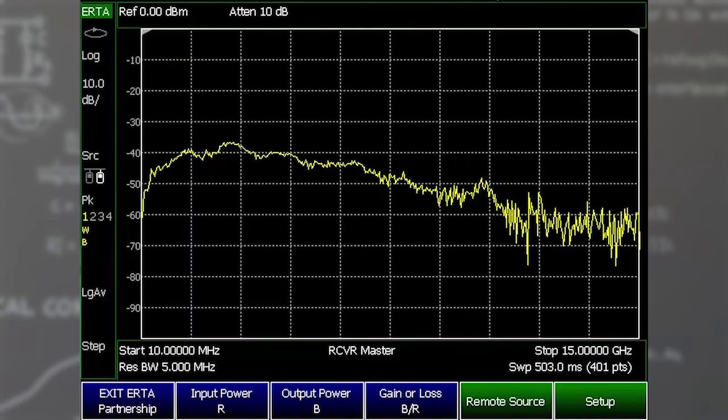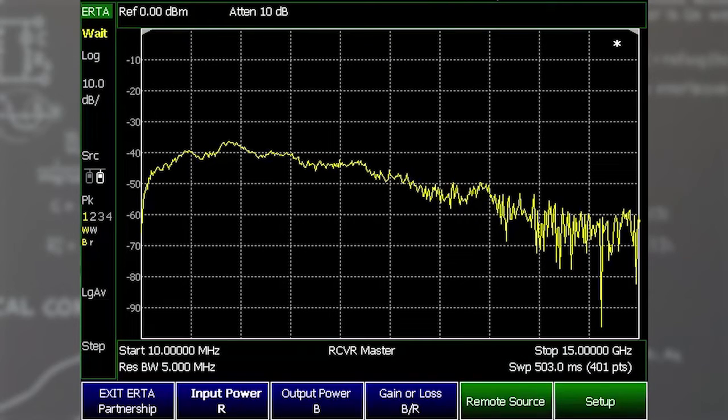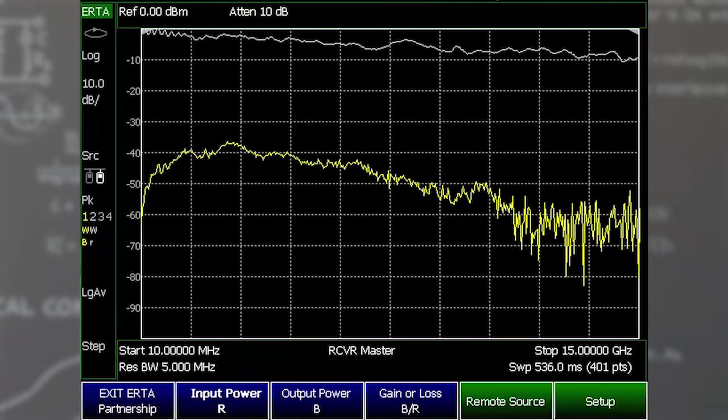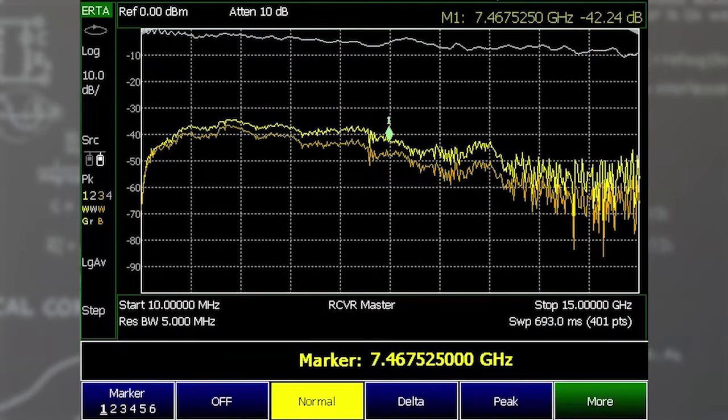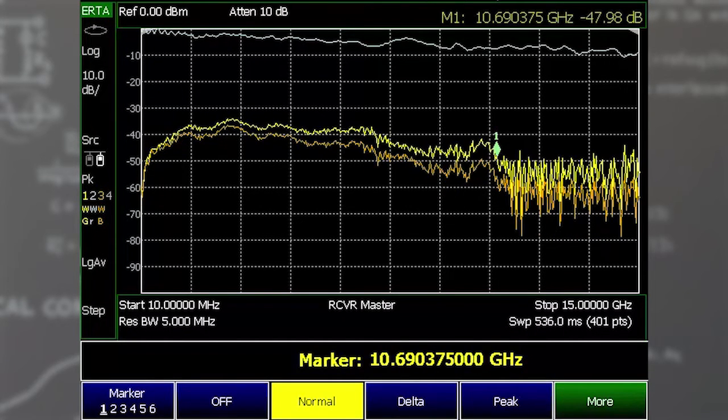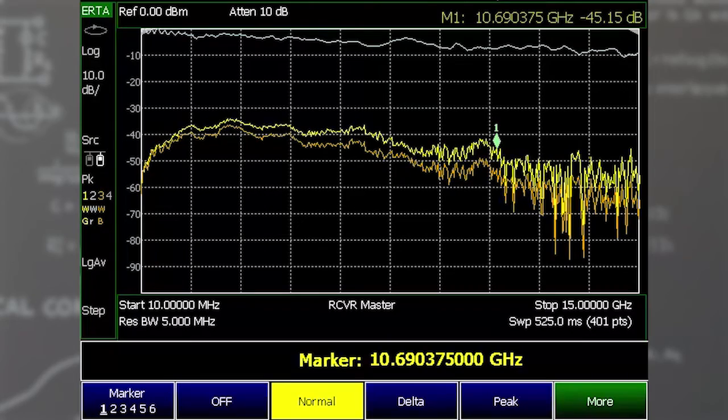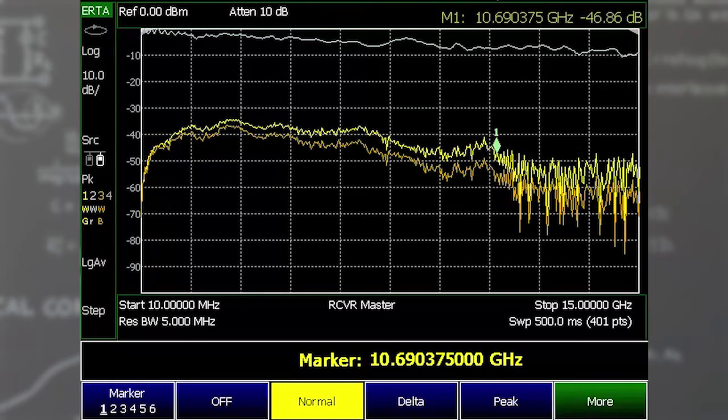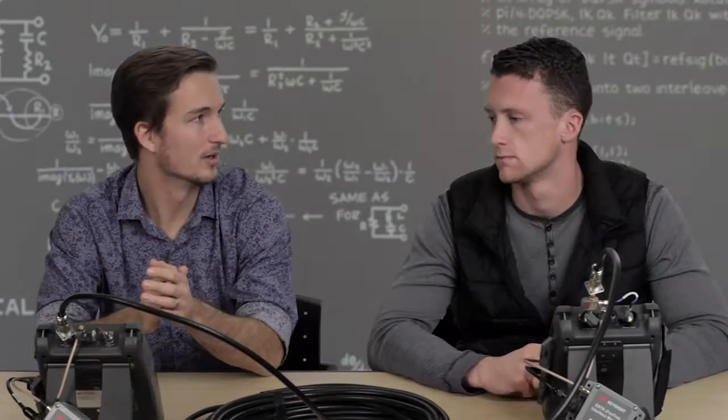So we're going to measure. We can check out our input power, our output power, and our gain or loss. We can see that at around 9 GHz, this cable really starts to have a roll-off in the power. It's expected because it's a long cable, so higher frequencies are going to be attenuated a lot more.